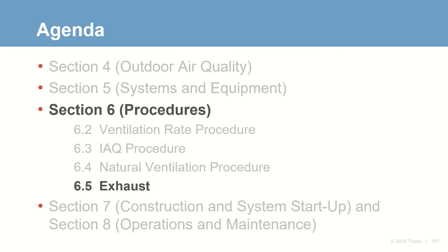Section 6.5 includes minimum requirements for exhaust air flow. The standard clarifies that these exhaust requirements must be met regardless of which of the three ventilation procedures is used. The intent is to remove contaminants at their source by exhausting air directly from those spaces.